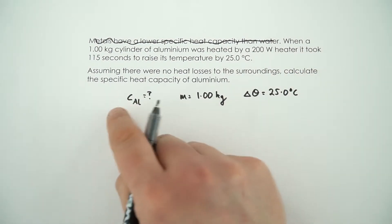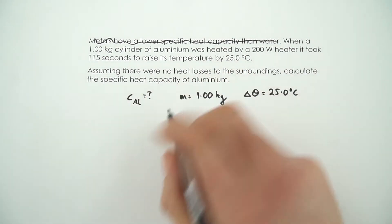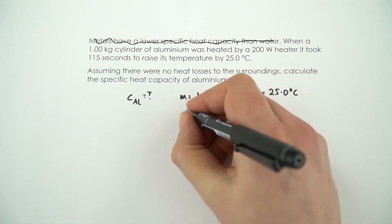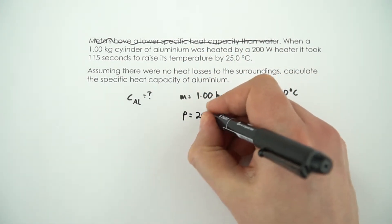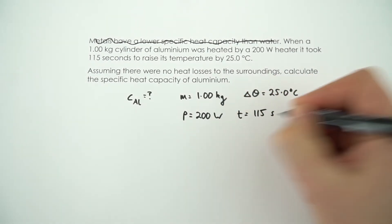But what's the energy? In order to work this out we need to know the energy transferred, and we can work out the energy by looking at the power and the time. The power is equal to 200 watts, and the time is equal to 115 seconds.